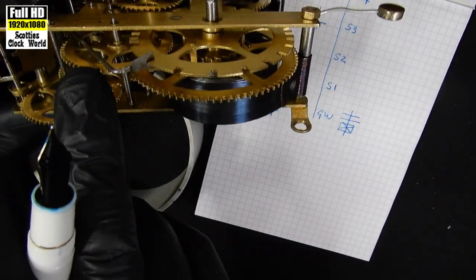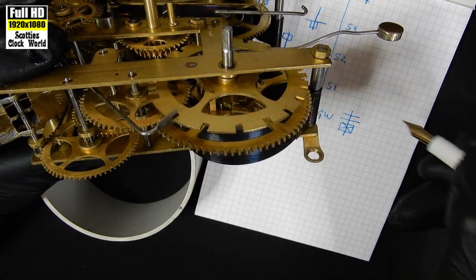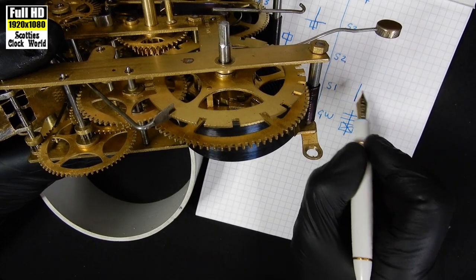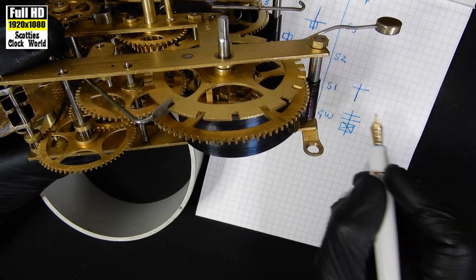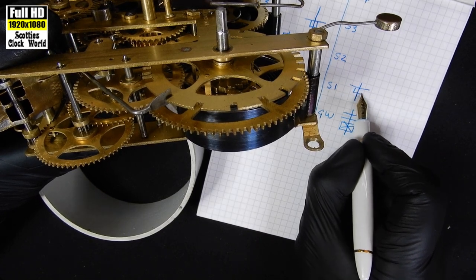Then we look at the next wheel, the first wheel, that one there. As usual, draw the arbor first. Then the wheels up at the top. And below that we have a pinion.